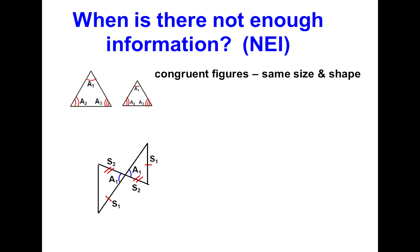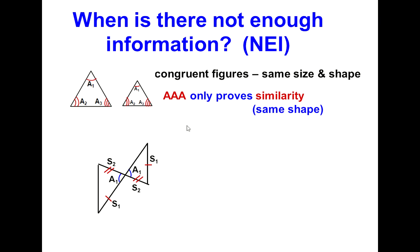When is there not enough information? Congruent figures have both the same size and the same shape. These two figures have three congruent angles, but they are clearly not the same size. AAA only proves similarity — the sides will be in proportion with each other. They have the same shape, not the same size, so there is no congruence. Therefore, we say not enough information. Even if the triangles were congruent, giving three angles would not be enough information.